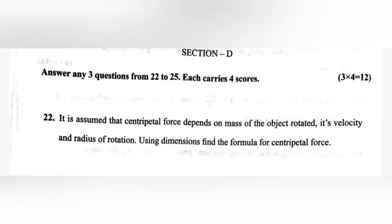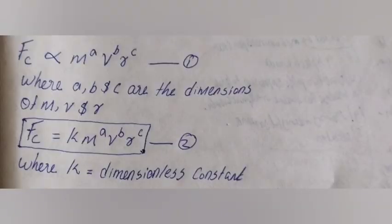Question 22: It is assumed that centripetal force depends on the mass of the object rotated, its velocity, and the radius of rotation. Using dimensions, find the formula for centripetal force. Let F_c ∝ m^a · v^b · r^c, where m is mass, v is velocity, and r is the radius — equation 1.